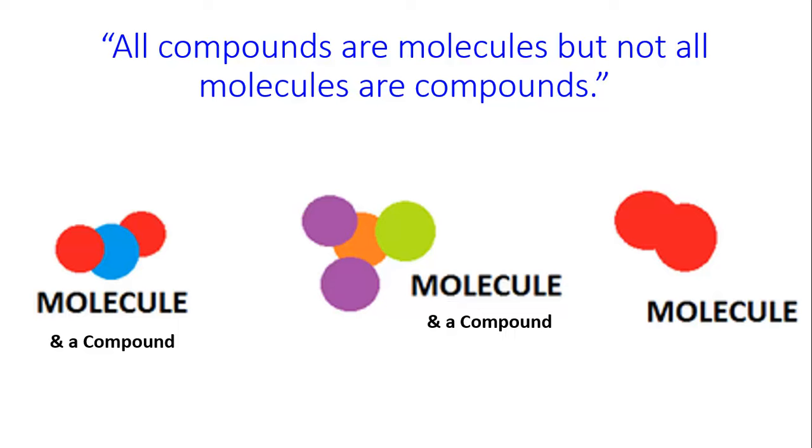If you take a look at the picture on the left, you see a blue atom and two red atoms. This is a molecule and a compound because it's a group of different atoms. Picture in the middle, it's a molecule and a compound. The picture on the right is a molecule. It is not a compound because it is only the same atoms joined together. It is not different atoms, so it is not a compound.